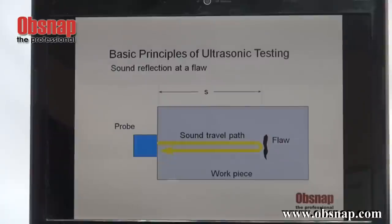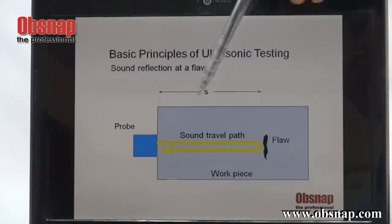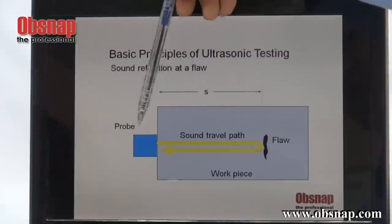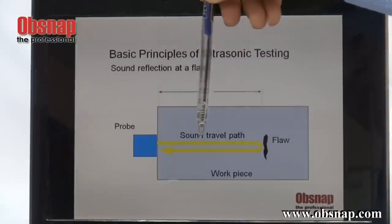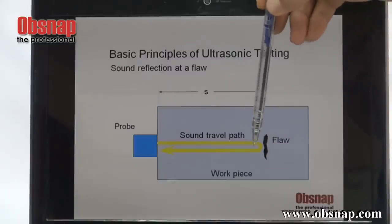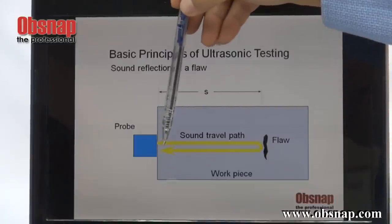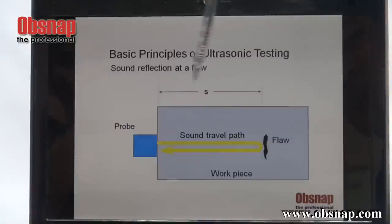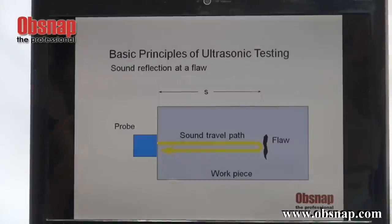How does this ultrasonic probe detect a flaw? It is by this mechanism. When the sound wave is generated by this probe, it will travel in the material, and when it encounters a flaw, the sound wave will actually be reflected. This distance is called the sound path. And this is the basic working principle of how we detect a flaw.